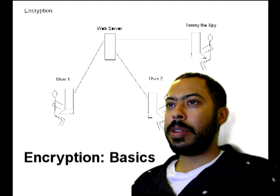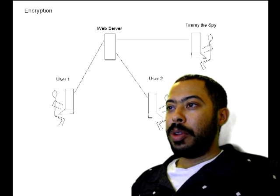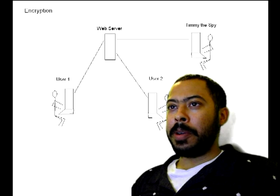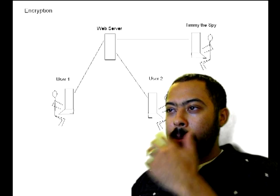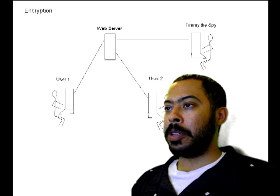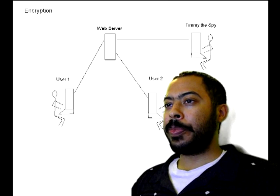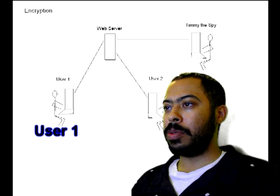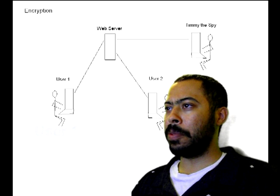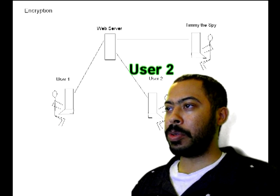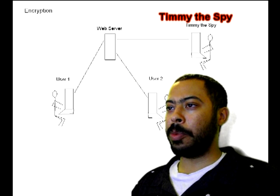In this information security class, we're going to do a review over encryption. We'll take it at its most fundamental form. We have two users who communicate frequently with each other, passing very sensitive information. We also have a spy who is part of that same network and can pull information from the web server.